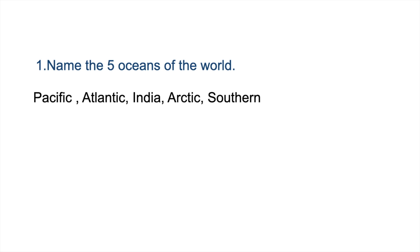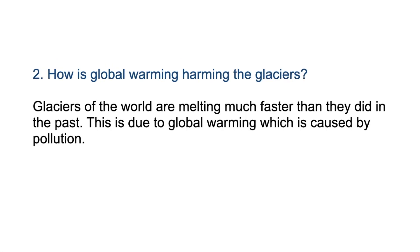Name the five oceans of the world: Pacific, Atlantic, Indian, Arctic and Southern. How is global warming harming the glaciers? Glaciers of the world are melting much faster than they did in the past. This is due to global warming, which is caused by pollution.